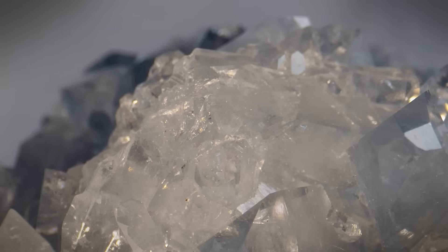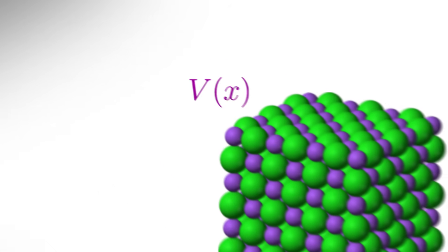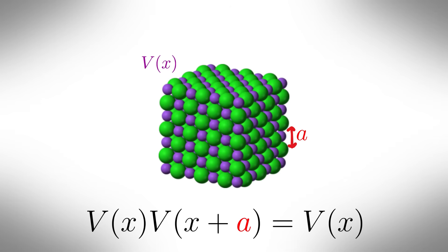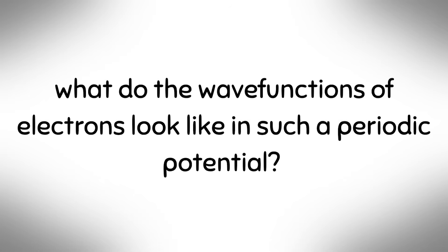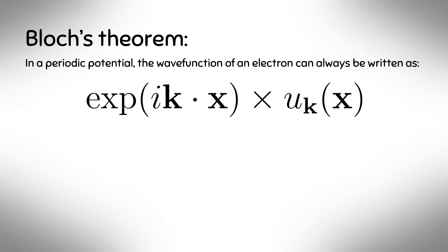Bloch's theorem. A crystal is made of atoms arranged in a periodic lattice, meaning the potential energy v of x that electrons feel repeats regularly. V of x plus a equals v of x, where a is the lattice spacing, or more generally, a lattice vector in 3D. The question is, what do the wave functions of electrons look like in such a periodic potential? Bloch's theorem states that in a periodic potential, the wave function of an electron can always be written as the product of a plane wave and a function with the same periodicity as the lattice. So the full wave function is this.